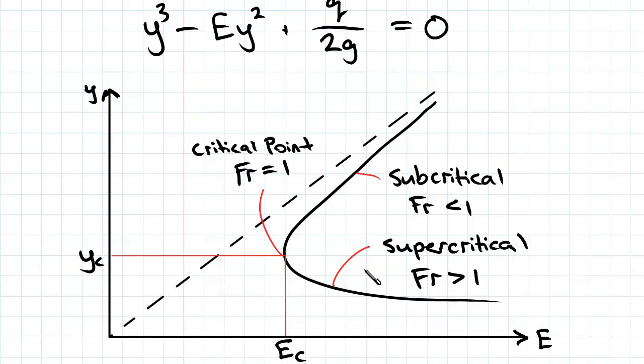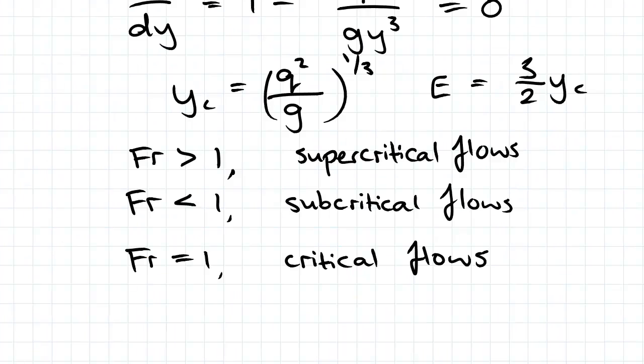For a given problem we are usually told the classification of the flow as sub or supercritical, most of the time it's subcritical. And from this we can solve the cubic to give us the required depth of flow y or its corresponding specific energy. Now remember we defined the specific energy curve for a specific value of q.